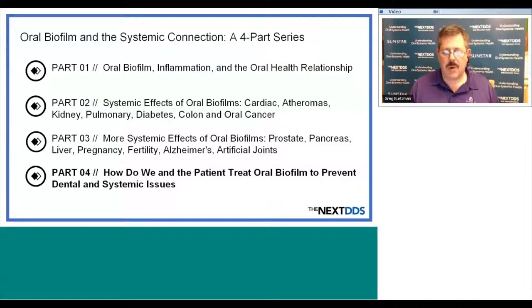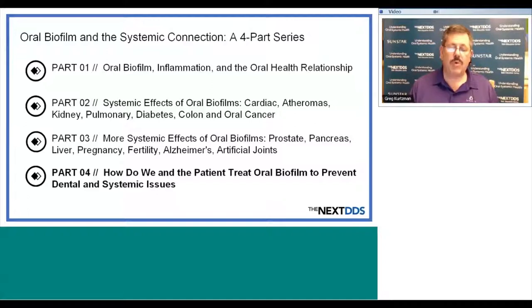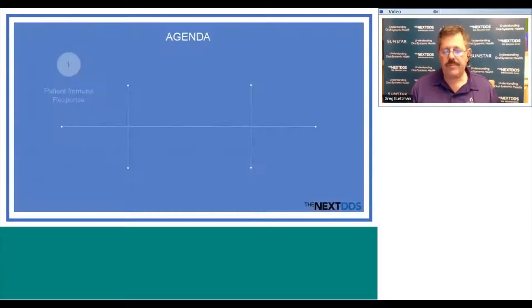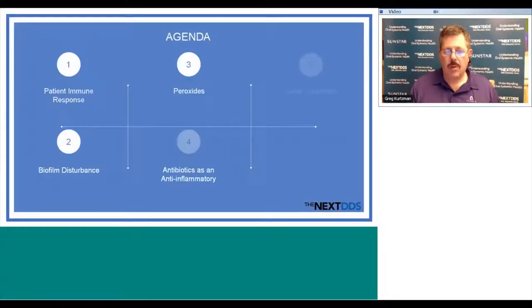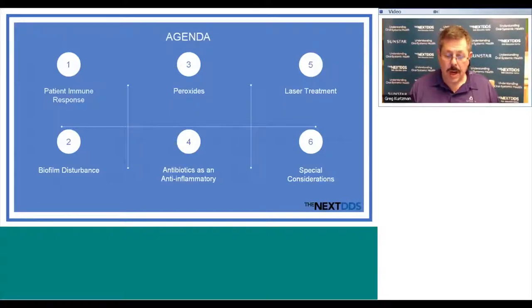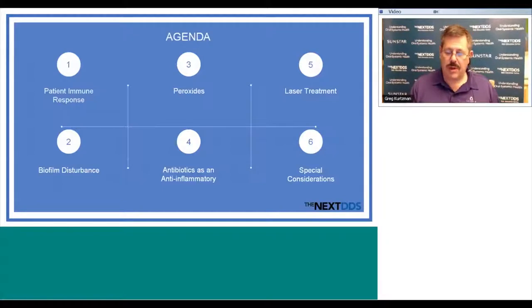Part three covered more systemic effects: prostate, pancreatitis, liver, pregnancy, fertility, Alzheimer's, and artificial joints. Now we're going to roll this all together — now that we have the knowledge of what the biofilm does, how do we actually treat this and bring it into clinical use? Our agenda will cover patient immune response, biofilm disturbance, how to treat with peroxides and why, antibiotics as an anti-inflammatory agent, laser treatment, and special considerations and treatments.